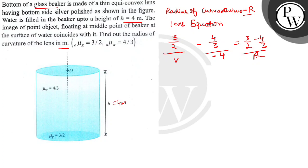Now this image at V acts as object for the next refraction. For the next refraction, our image in V will act as an object. This means 1 upon V minus 3 by 2 upon V is equal to 1 minus 3 by 2 upon minus R.